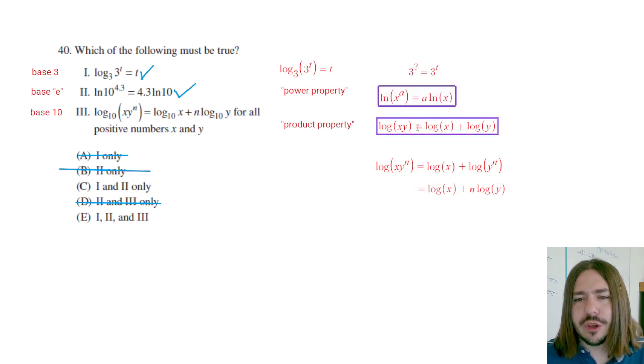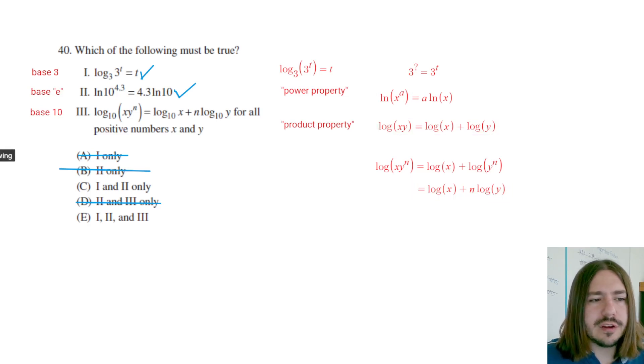But it's rooted in the fact that the product property works. It is really just a specific case of the product property. So we get log x plus n log y, which is what we have over here. So that's going to be true.